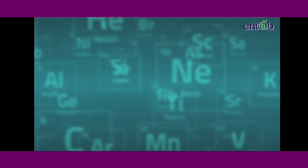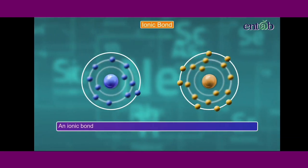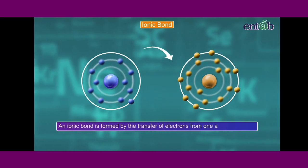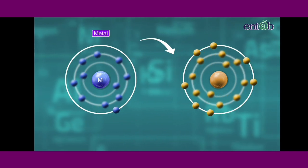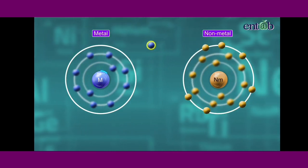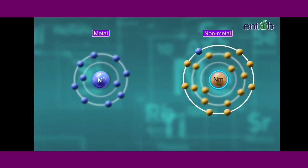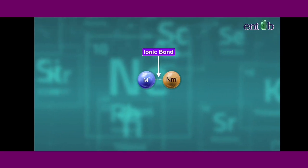We have learned in the previous module that an ionic bond is formed by the transfer of electrons from one atom to another. When a metal reacts with a non-metal, transfer of electrons takes place from the metal atom to the non-metal to form an ionic bond.